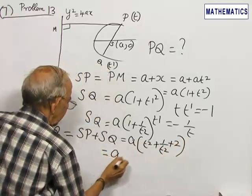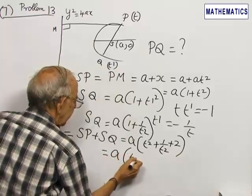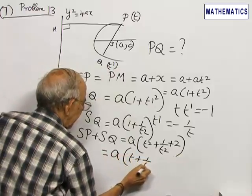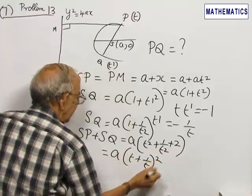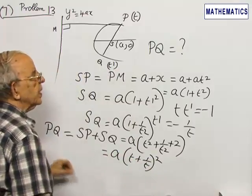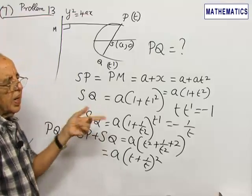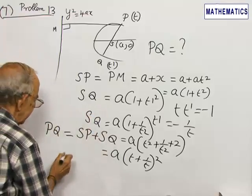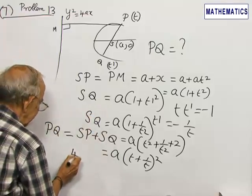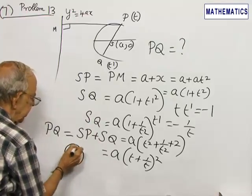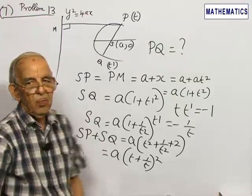That is equal to a into t plus 1 by t whole squared. Looking at the four choices, you are able to see that the correct answer is given by choice 4.